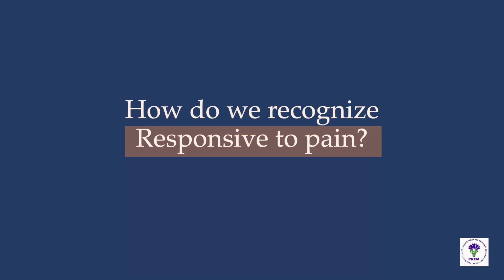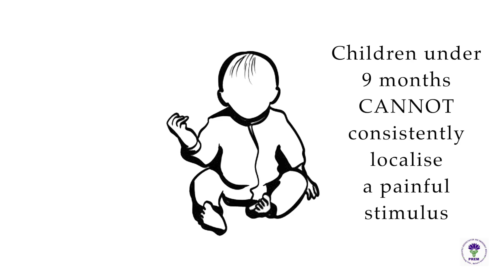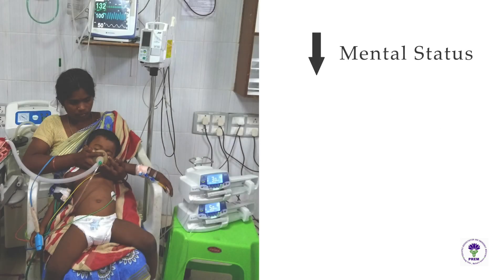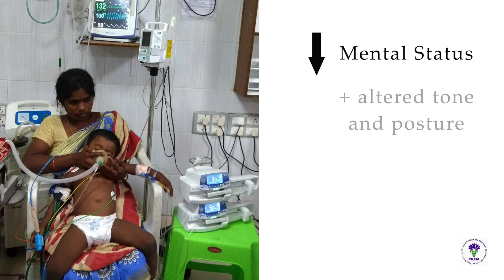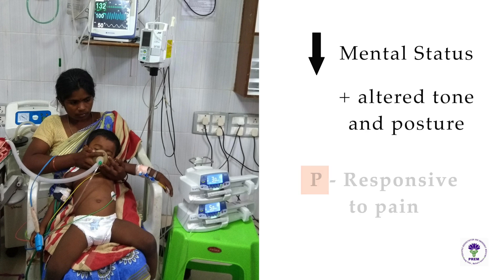But how do you recognize responsive to Pain? Children under 9 months cannot consistently localize a painful stimulus. Hence, a drop in mental status associated with altered tone and posture is defined as Pain responsive — scored as P.